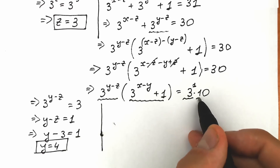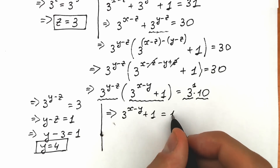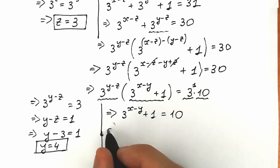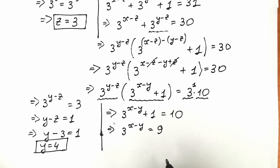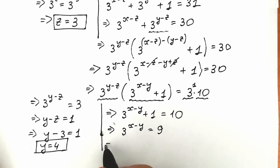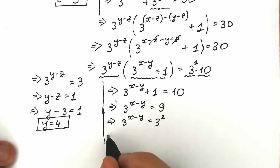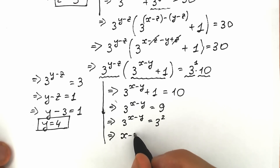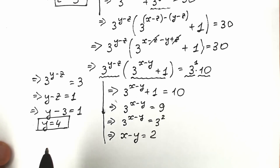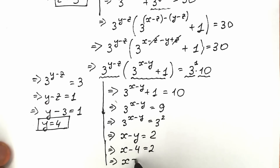We have z equals 3 and y equals 4. The remaining expression is: 3 to the power x minus y, plus 1, equal to 10. Moving the 1 to the right side gives 3 to the power x minus y equal to 9. Since 9 is 3 squared, we have 3 to the power x minus y equal to 3 squared. Therefore x minus y equals 2. Since y equals 4, we get x minus 4 equals 2, so x equals 6.